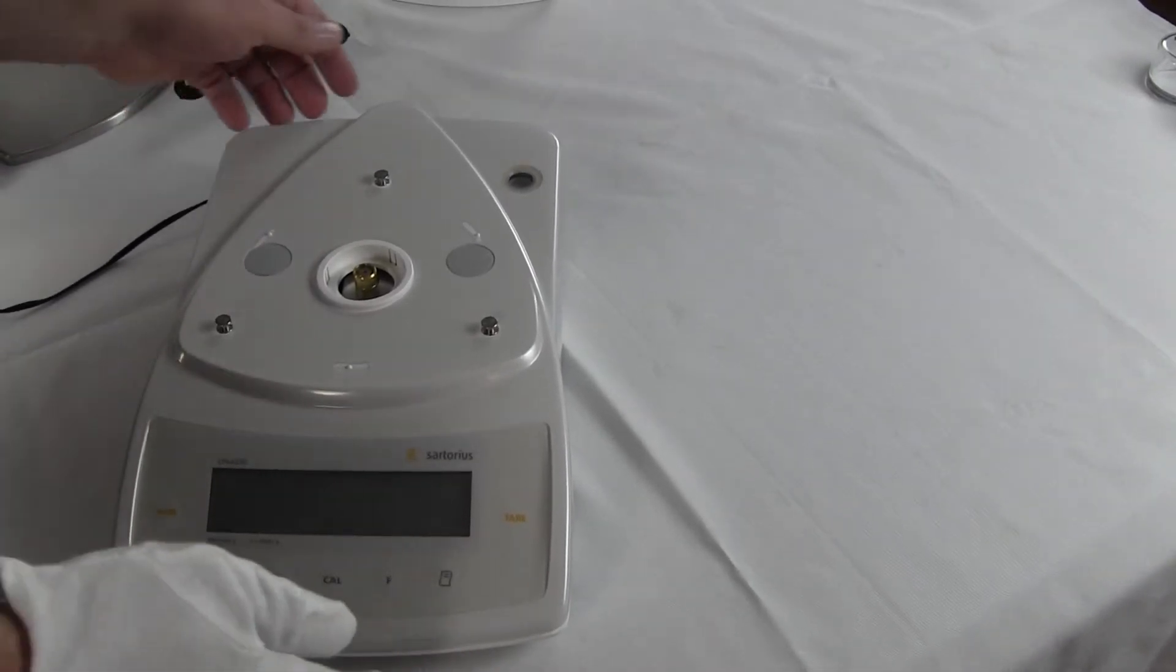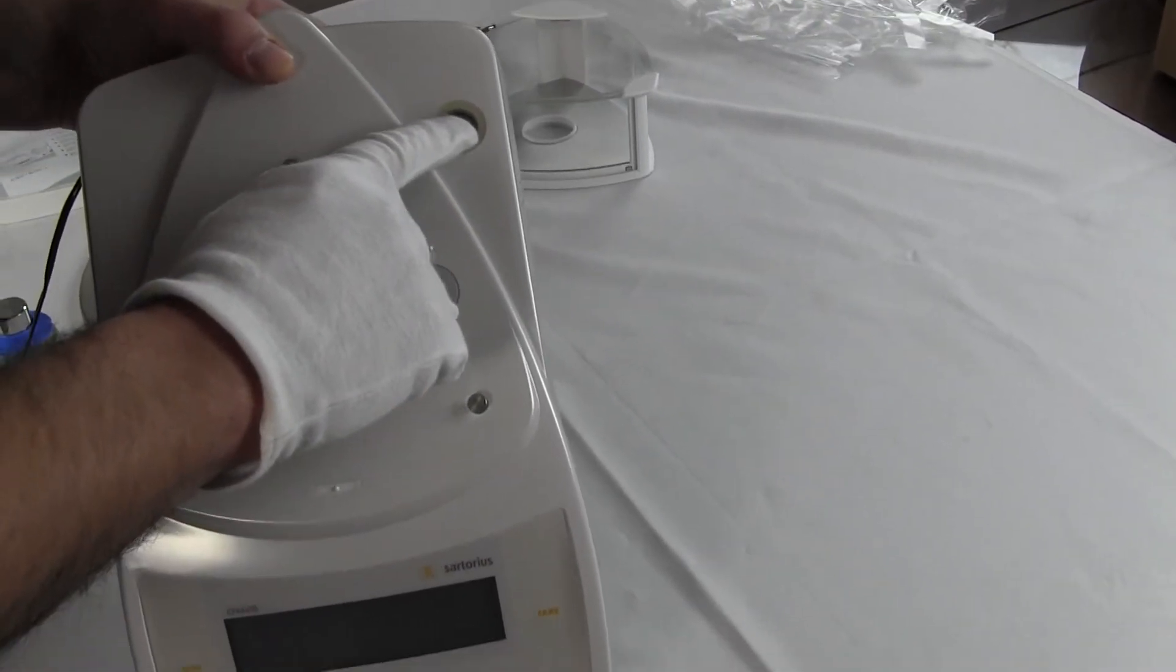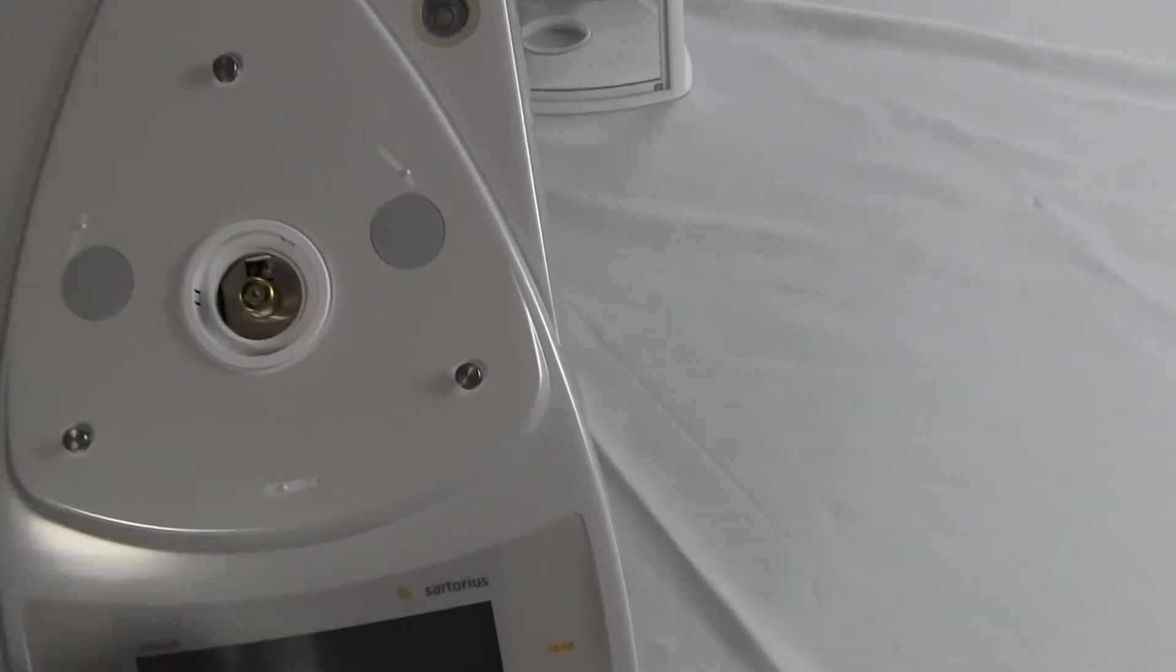Getting back to the balance itself, you'll notice in the top right-hand corner, we have a spirit bubble. This is for adjusting the balance to make sure it's level. Your balance always should be level.